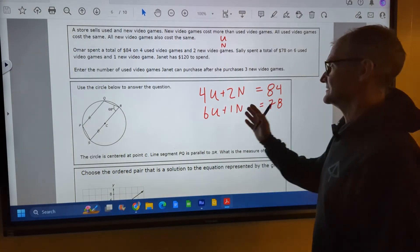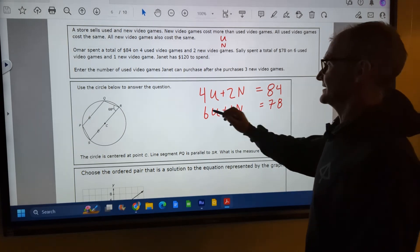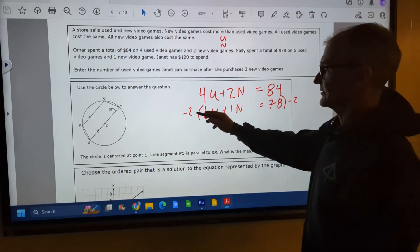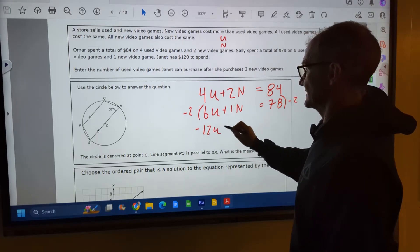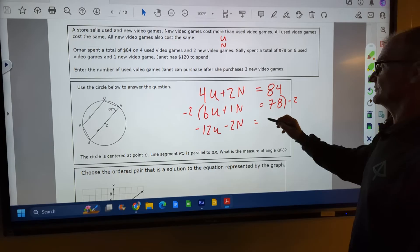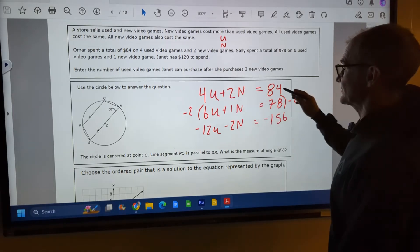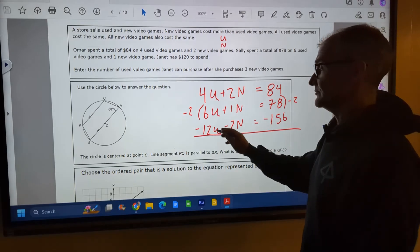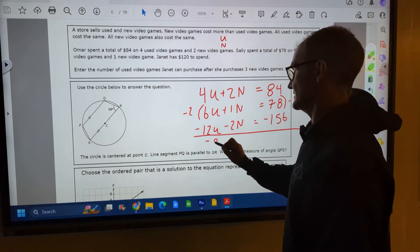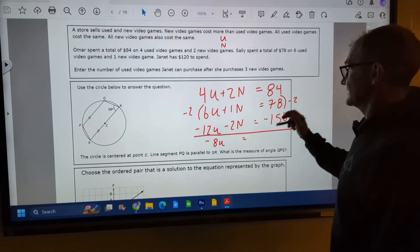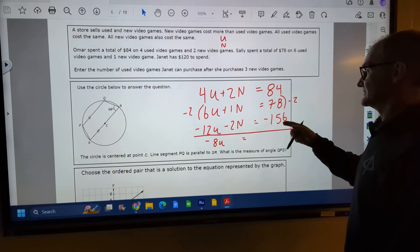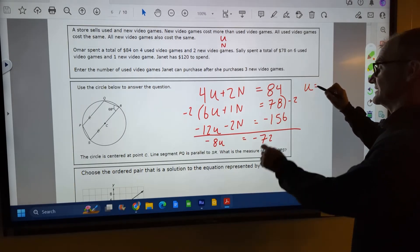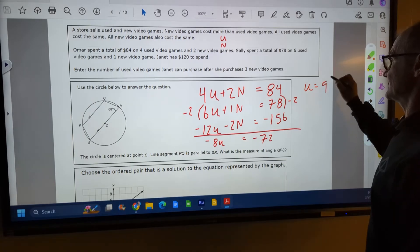A couple ways to solve for the number or the price of the U's and new video games is linear combinations. Combine the two equations, get one variable to drop out, or substitution. I think I'm going to take this second equation here, multiply it by negative two on both sides, and then get rid of those two N. So I'm going to multiply this by negative two to get negative twelve U, negative two N, then over here, one four, what is that? Negative one fifty-six. So I'm combining that top equation with this bottom one now, right? And now I'm going to see my two N and negative two N is going to drop out. So I've got four U minus twelve U, negative eight U. Again, my N's drop out. Eighty-four and negative one fifty-six. What is that? Negative seventy-two. Divide both sides by negative eight, and U is equal to negative seventy-two divided by negative eight, nine. So I've got a value for U.